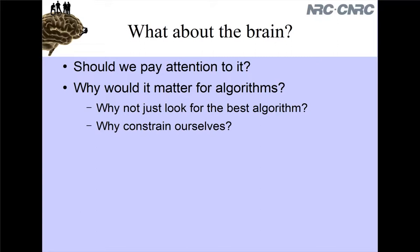That's a really common point of view for people making cognitive architectures. The argument goes: if we're interested in the algorithms underlying cognition, let's just focus on the algorithms — why add the extra task of figuring out exactly how that algorithm happens to get implemented in biological neurons? Why put that extra constraint on ourselves if all we're doing is looking for the best algorithm to explain cognition? That was compelling to me for a long time, but I had this worry in the back of my head about what was going on there.